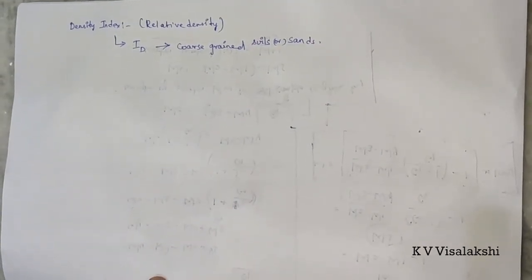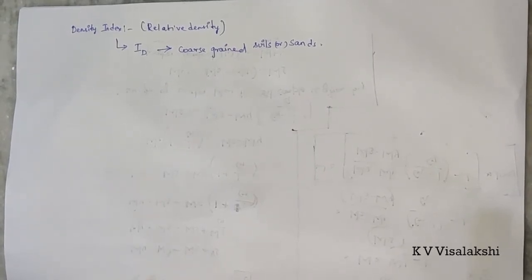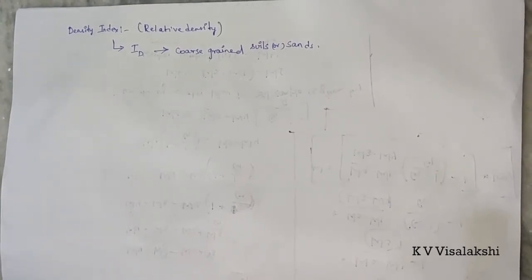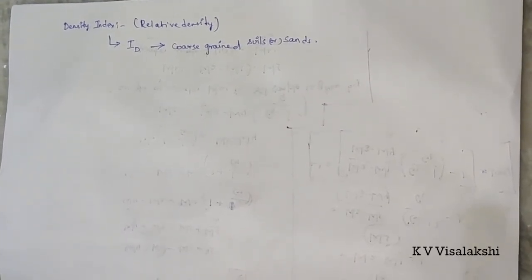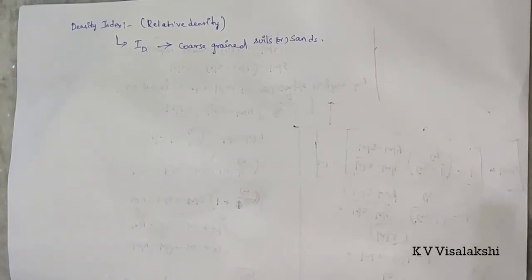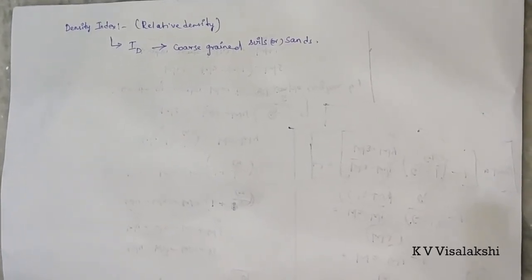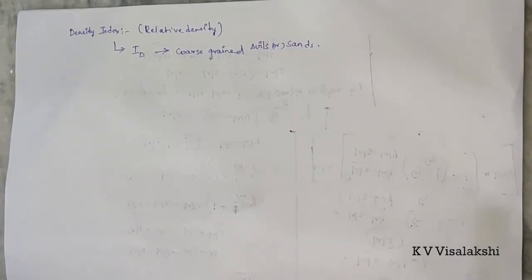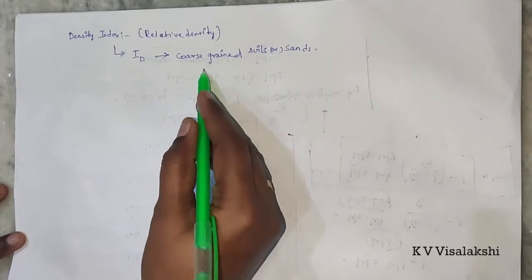We have two forms of conditions: one is the loosest state of condition and the other is the densest state of condition. In a dense condition, the void ratio is low, whereas if you consider loose condition, the void ratio is high. This is because of the densification of the particles and the interaction of the particles. We will place the void ratio and compare it in this relative density.